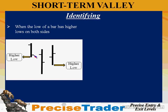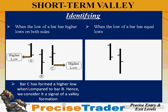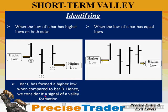When bar C has formed a higher low compared to bar B, we consider this the first signal of a valley formation. This is not a confirmation — it is the first indication that the market may reverse. It's like a driver putting on an indicator to turn right: there's no 100% guarantee they will turn right, they may keep going straight. Similarly, this is just the first indication that price is going to turn.